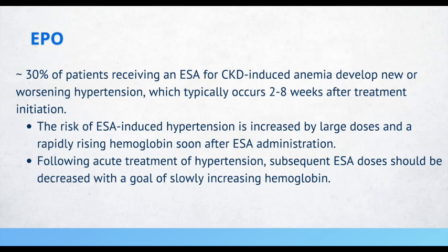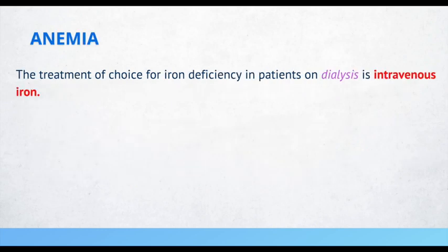The hypertension typically presents two to eight weeks after starting the EPO agent. The risk is increased by large doses and a rapid rise in hemoglobin. Once you treat the hypertension, EPO doses afterwards should be decreased with a goal of slowly increasing the hemoglobin. Another high yield fact: the treatment of choice for iron deficiency in patients on dialysis is IV iron.